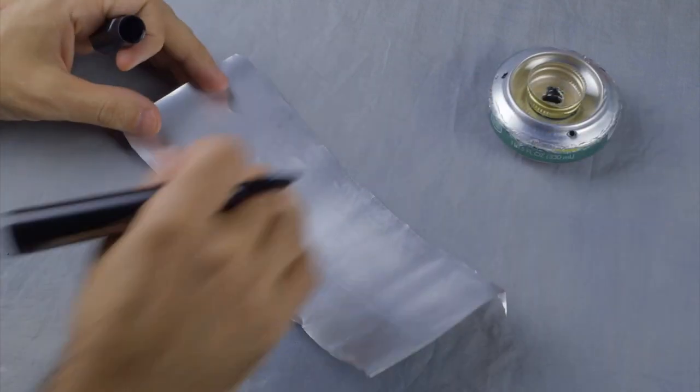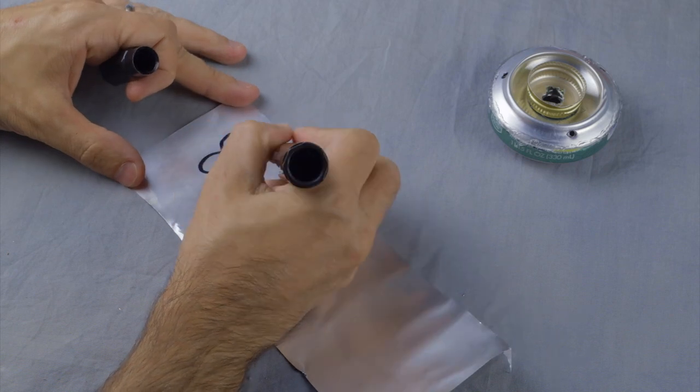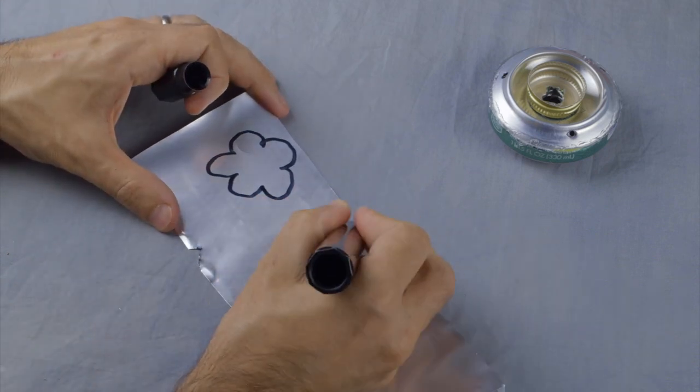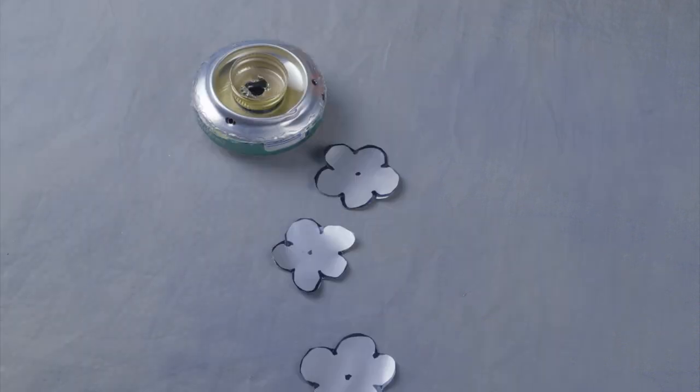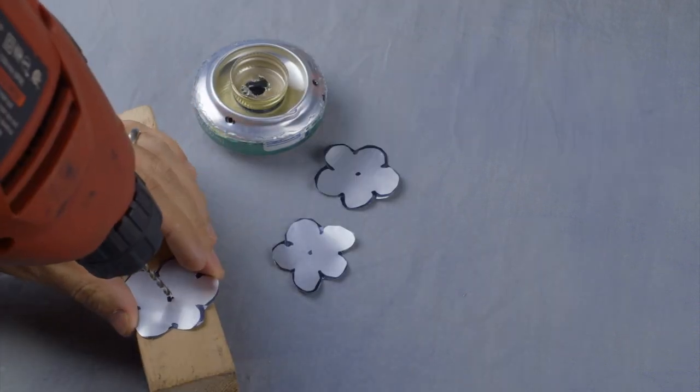Now draw and cut out flower shapes from the leftover pieces of aluminum can, one inch to an inch and a half in diameter. Drill holes in the center of each flower.